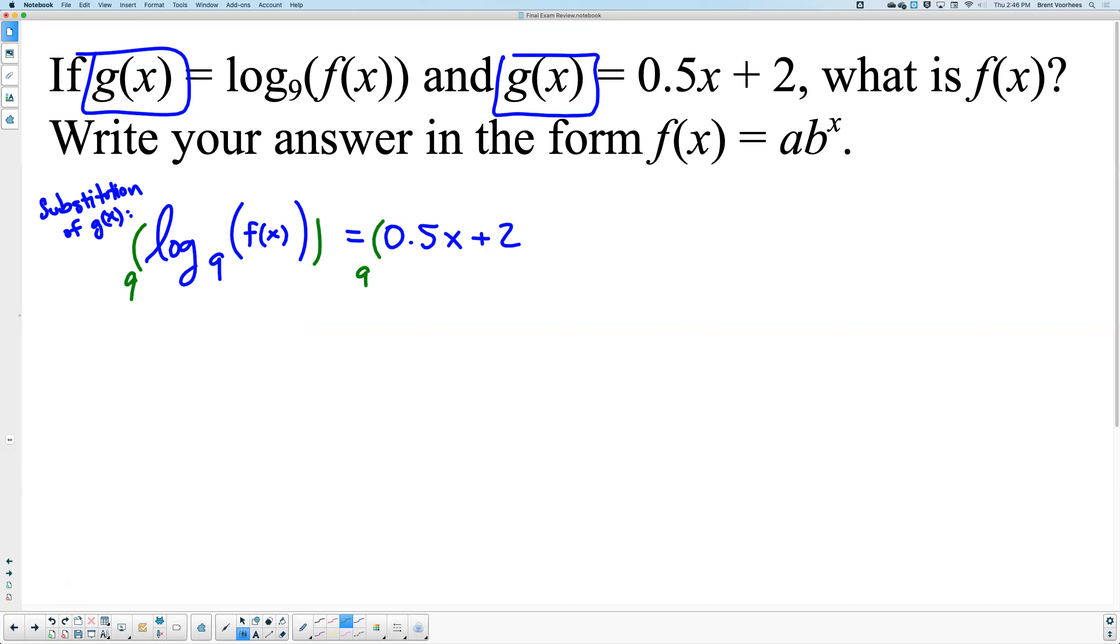Raise both to the power of 9. That's what you're doing. These two cancel each other out, and so what you're left with is f(x) equals 9 raised to the power of 0.5x plus 2. And I really don't need a parenthesis here. I'm going to take away the parentheses: 0.5x plus 2.